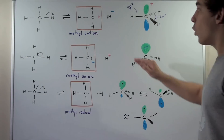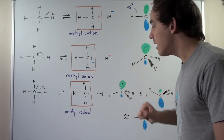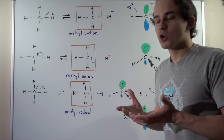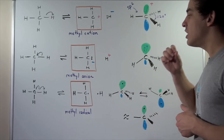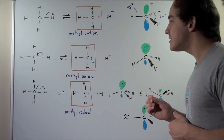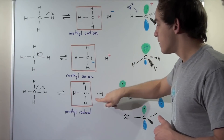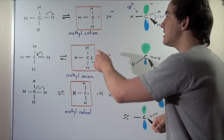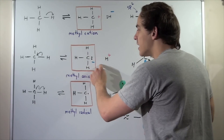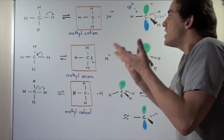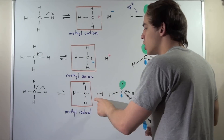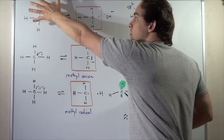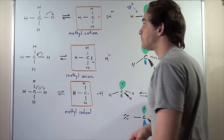So once again, all three molecules — the methyl cation, the methyl anion, and the methyl radical — are very reactive. They are called reactive intermediates, and they will not persist in a stable state for very long. They will exist for a very short time and will either react with other molecules to regenerate the starting reactants, or react to produce new compounds.